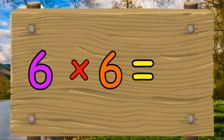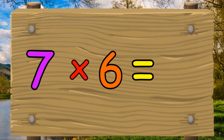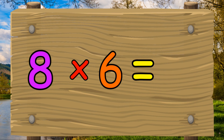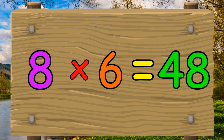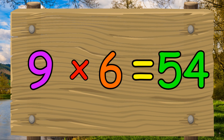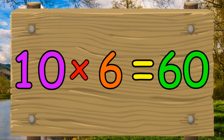Six times six equals thirty-six. Seven times six equals forty-two. Eight times six equals forty-eight. Nine times six equals fifty-four.